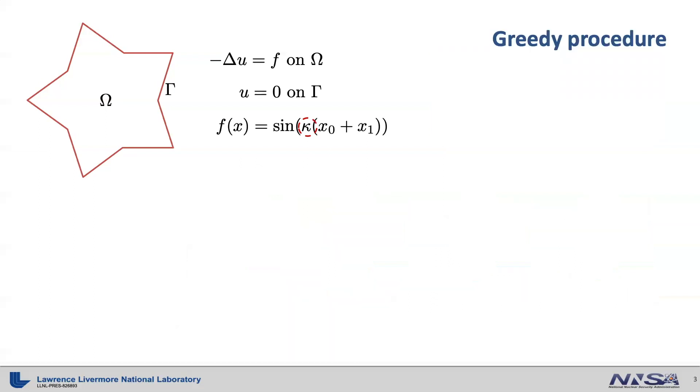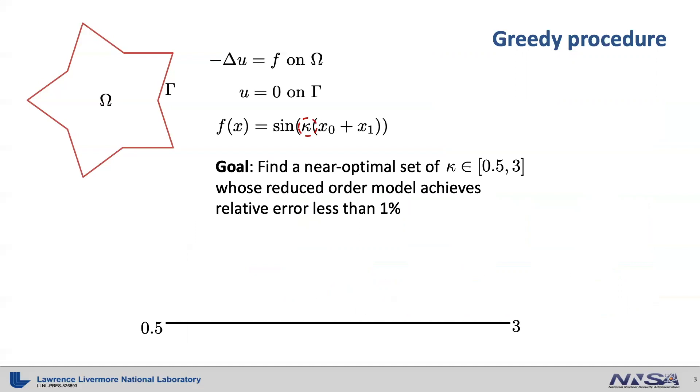To describe a greedy procedure, let's say we would like to find the near optimal set of kappa values whose reduced order model achieves a relative error less than 1% for every kappa value between 0.5 and 3. To achieve this, a greedy procedure starts with a reduced order model that is built by simulation data at one point in the parameter space.